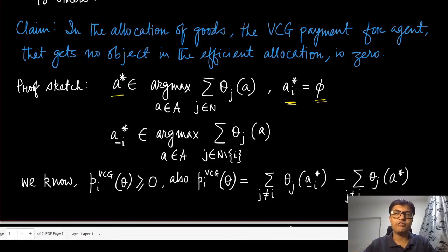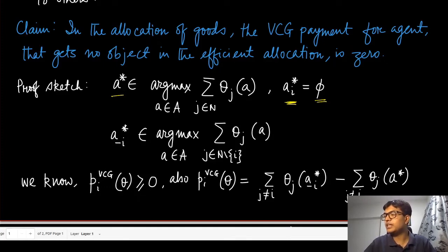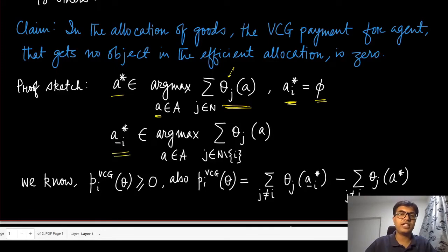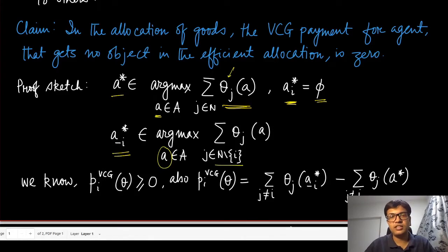To prove this, we look at two scenarios. The first is where all agents are present, and we pick the allocation maximizing the sum of valuations — written as theta_g of a*. The second is the efficient allocation excluding agent i: if agent i were not present, we find the allocation maximizing the sum of all other agents' values. We use the notation theta_g without agent i for this scenario.